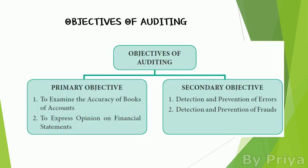Finally, let us look at the objectives of auditing. There are two objectives: primary and secondary. The primary objectives are: first, to examine the accuracy of books of accounts, and second, to express an opinion on the financial statements. After checking everything, the auditor gives a report to the firm.